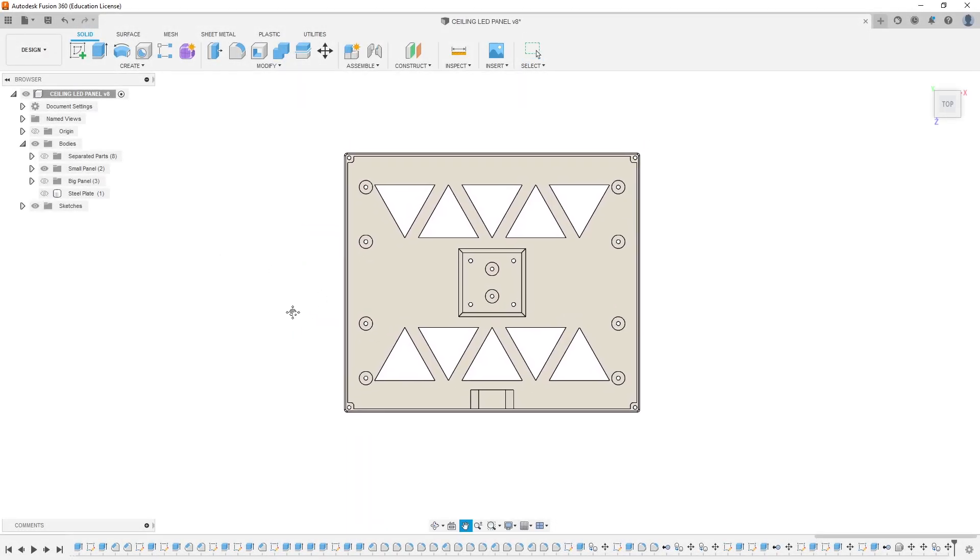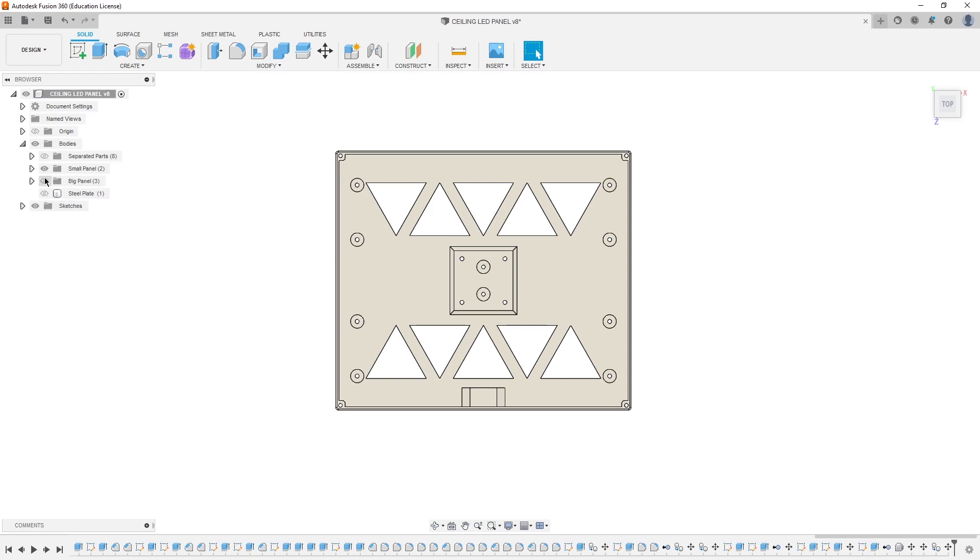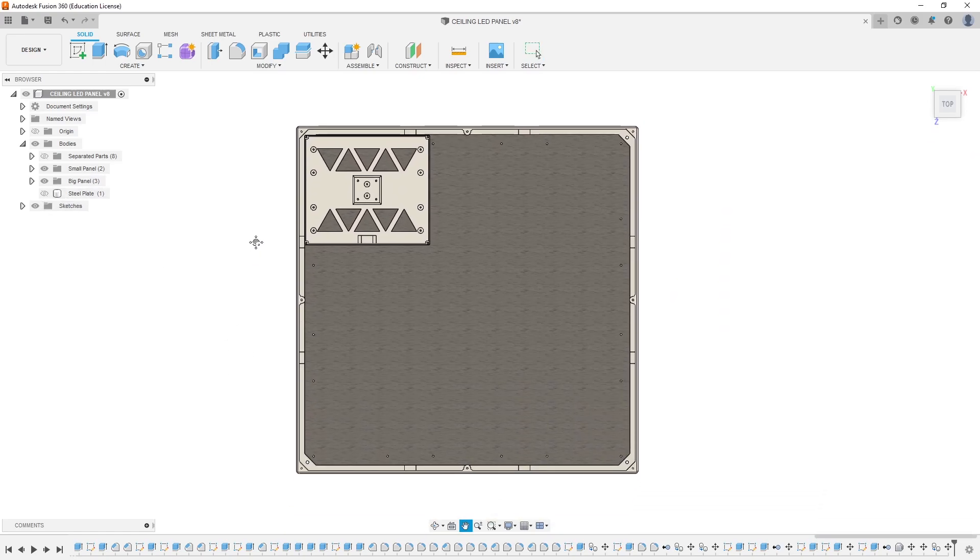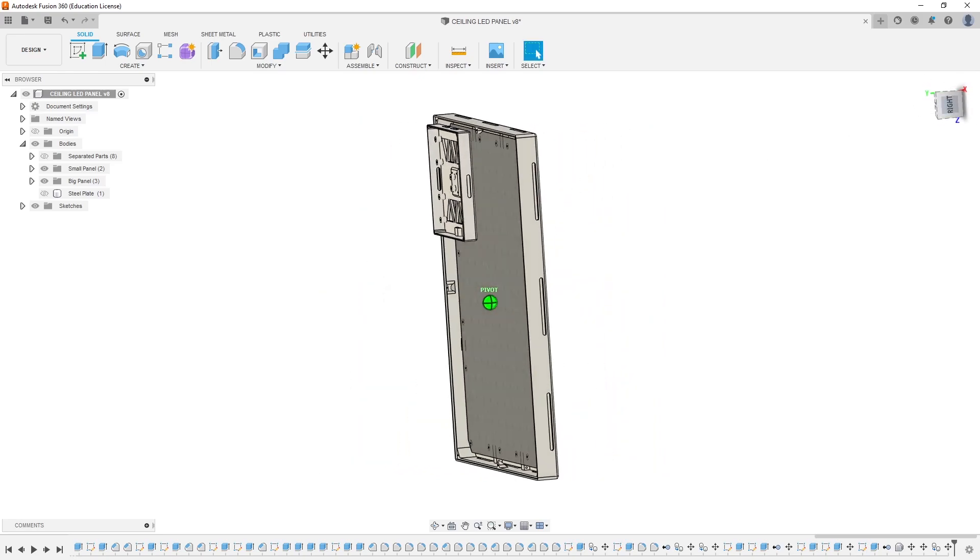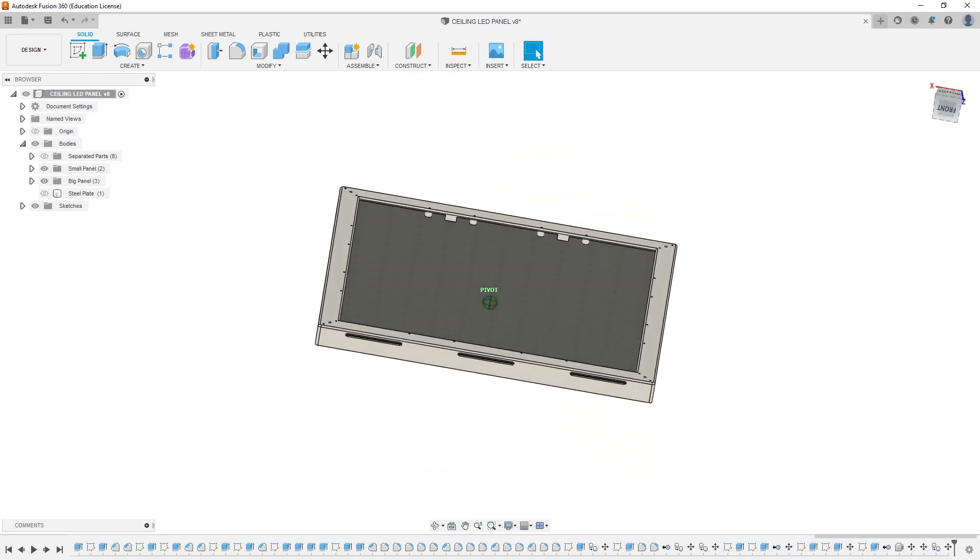Now back to the LEDs. So here is the case of our first panel, and now here is the new one. As you can see, it is definitely bigger. That's because it's meant to be a ceiling panel with a lot more LED strips.